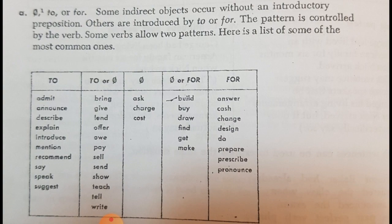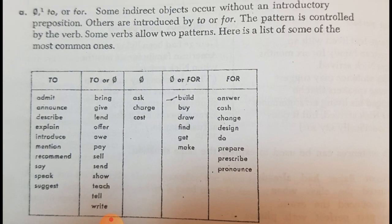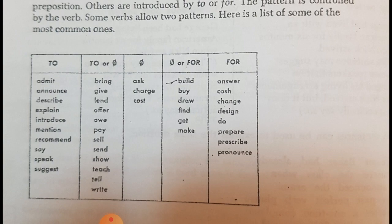For example, some verbs cannot move to come after the direct object. So, for example, the verb ask. If you say I ask her a question, it is not possible to say I ask a question to her, not possible for her. No, there is only one form.